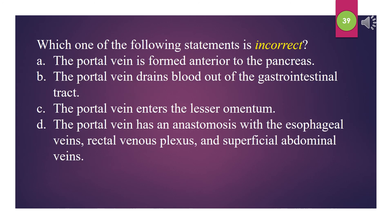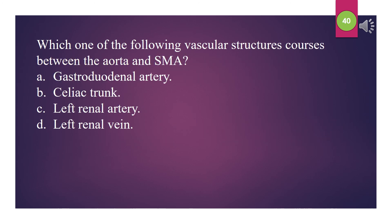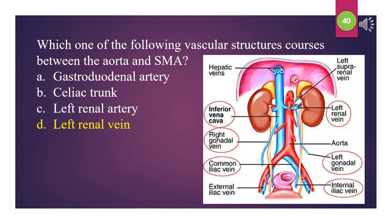Which one of the following statements is incorrect? A. The portal vein is formed anterior to the pancreas. B. The portal vein drains blood out of the gastrointestinal tract. C. The portal vein enters the lesser omentum. D. The portal vein has an anastomosis with the esophageal veins, rectal venous plexus, and superficial abdominal veins. The answer is A: The portal vein is formed anterior to the pancreas. Which one of the following vascular structures courses between the aorta and SMA? A. Gastroduodenal artery. B. Celiac trunk. C. Left renal artery. D. Left renal vein. The answer is D: Left renal vein.